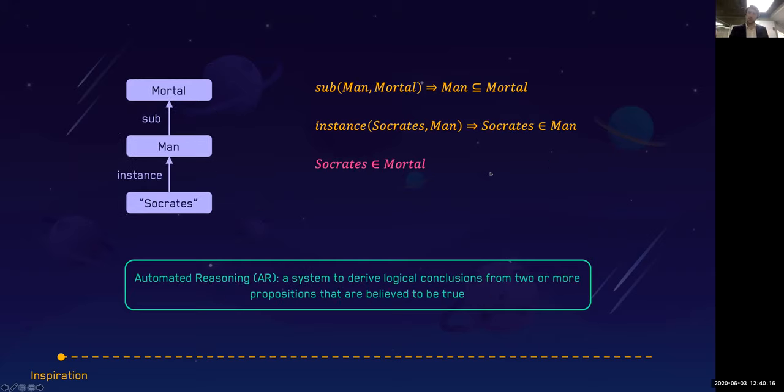When it comes to automated reasoning, we think of a system to derive logical conclusions from two or more propositions that are believed to be true. In the example we're showing, if we know that man is a subtype of a mortal, and we also know that Socrates is an instance of a man, given those two propositions, we can therefore logically conclude that Socrates is mortal as well.